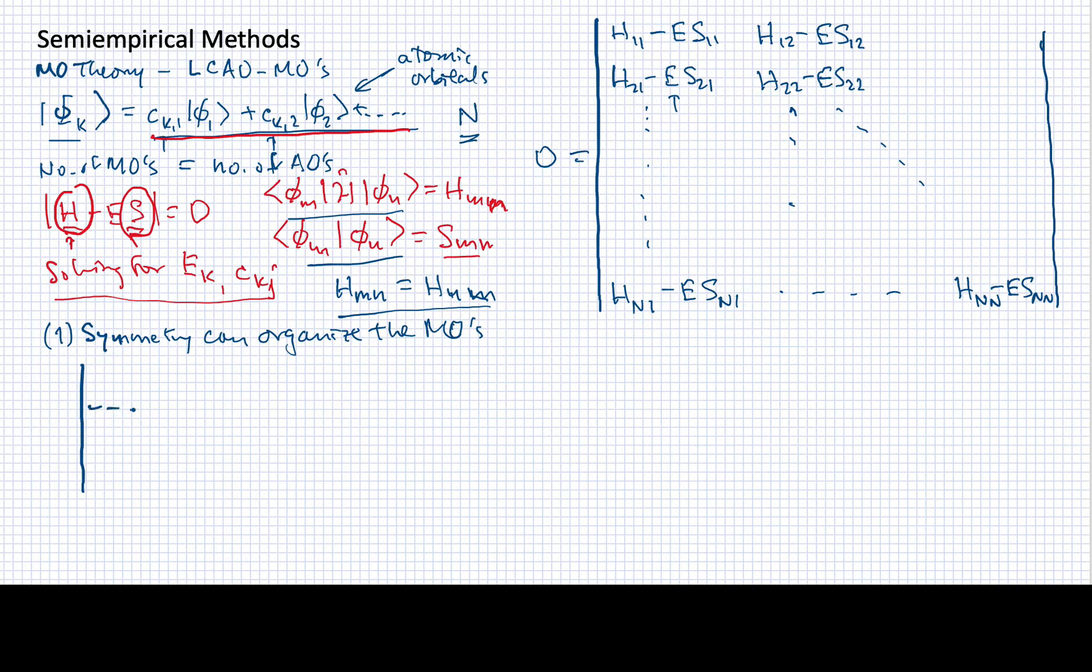Now I might have different blocks along here forming my secular determinant. I might have a block here, a block here, of molecular orbitals related by symmetry. Because they are related by the same symmetry but not related to the other sets of molecular orbitals, all the elements out here are zero. That simplifies things greatly because now all I have to do is solve this secular determinant equal to zero, this secular determinant equal to zero, and this one separately.